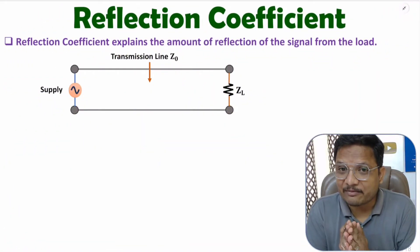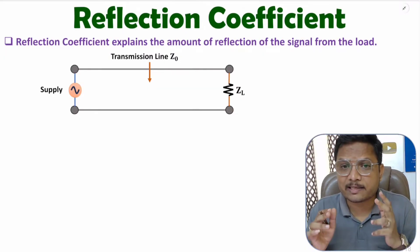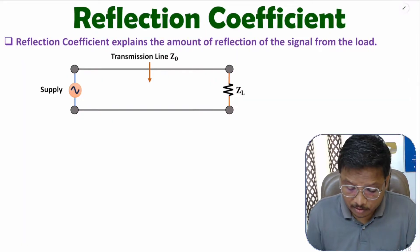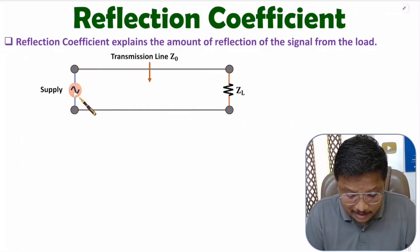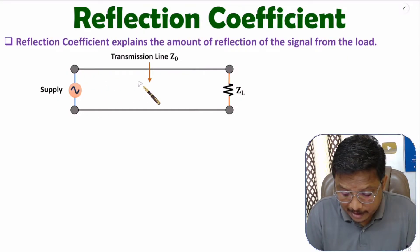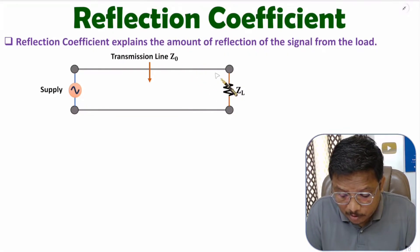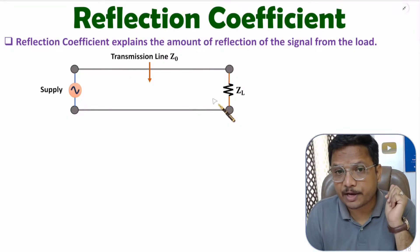Hello friends, welcome to Engineering Funda Family. In this video I'll explain the reflection coefficient of transmission line and derive its equation. The reflection coefficient explains the amount of signal reflected from the load. We have a transmission line with characteristic impedance Z0, with a supply at the input side and a load at the output. Based on impedance matching between Z0 and ZL, there will be reflection of signal.